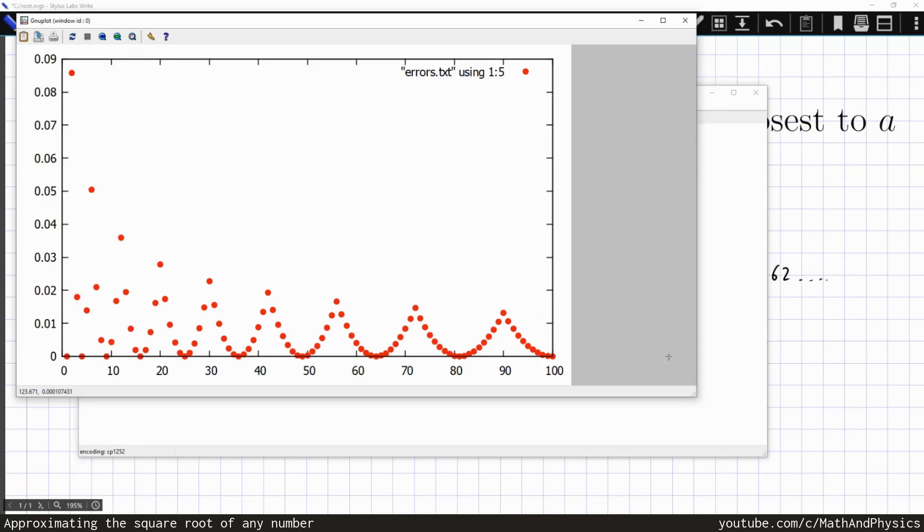So there are a few things to notice. First of all, for the perfect squares, so 81, 64, and so on, the formula gives an error of zero. So it is exact for perfect squares. And then it works really well for numbers that are close to perfect squares. So for the numbers around the perfect squares, the error is really small. And then it gets larger and larger, and for numbers in between two perfect squares, the error is largest.